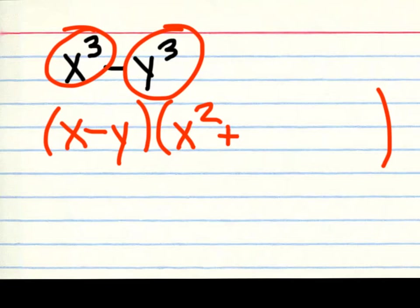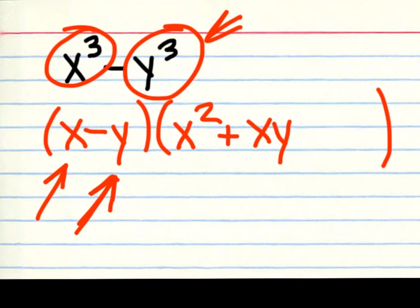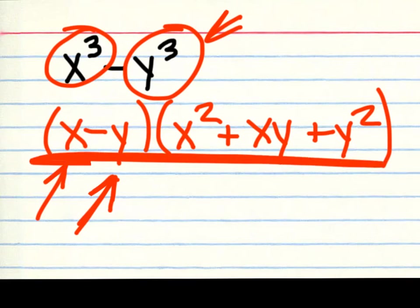The middle term is the two cube roots multiplied together. The cube roots were x and y, so you simply multiply them together and put them in the middle. Then you finish it off with the square of the cube root from the back end — the cube root was y, so you need y squared. This is the answer.